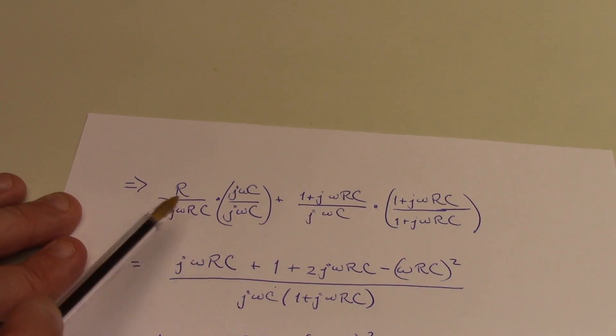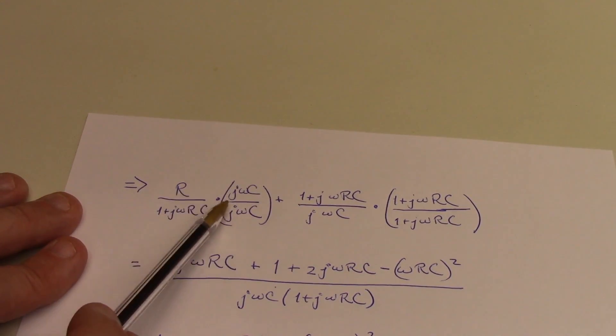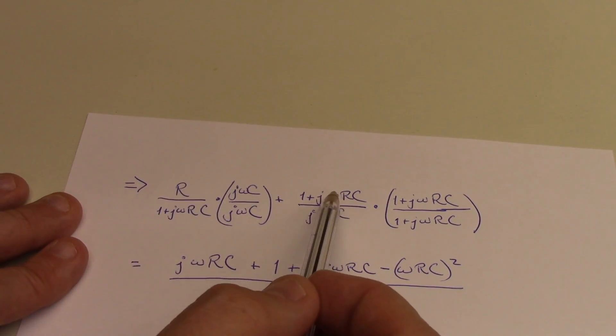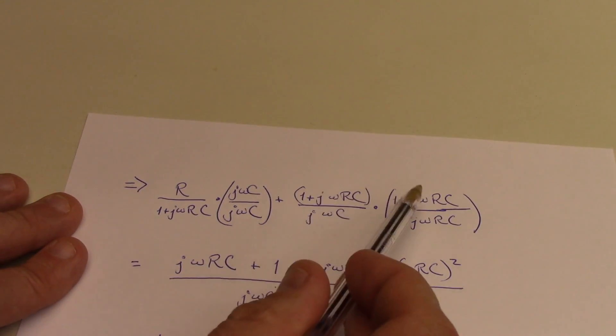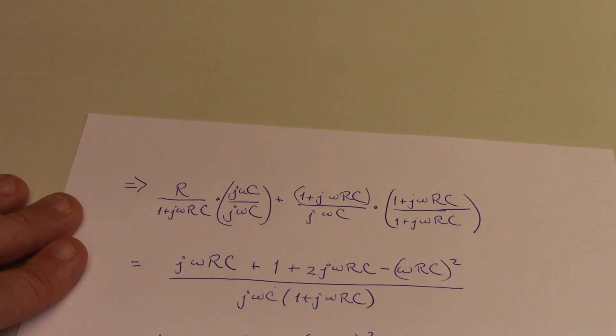So when I do that for this term, I'm going to get j omega rc right here. And then I have to multiply this binomial term by this binomial term. I'm going to get 1 times 1 is 1.